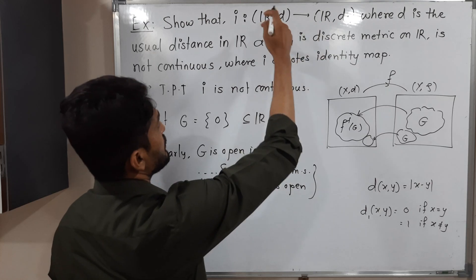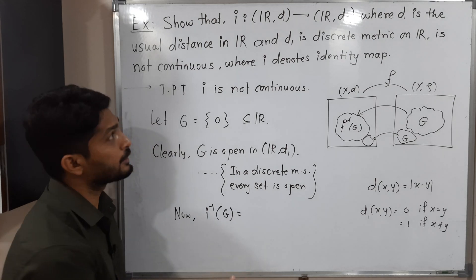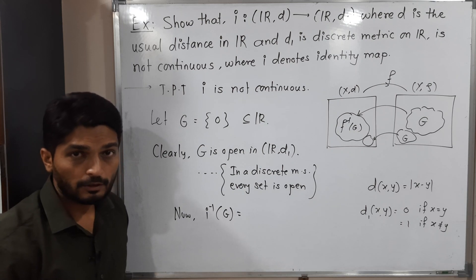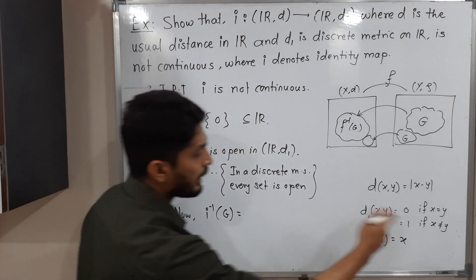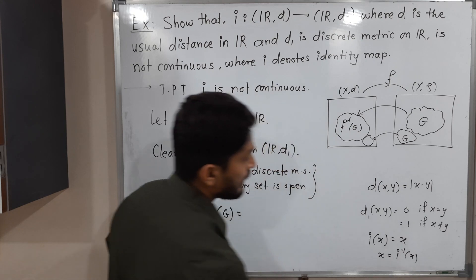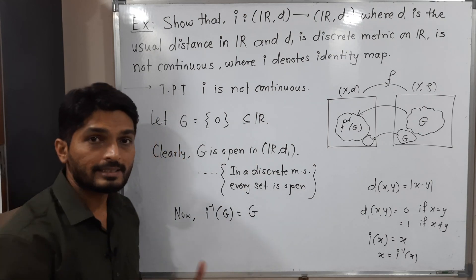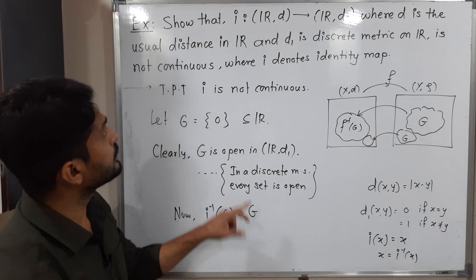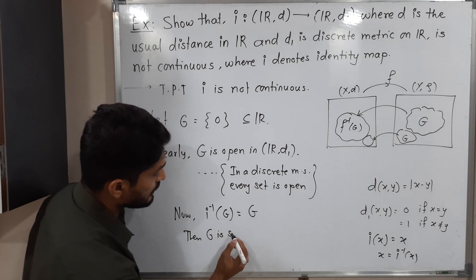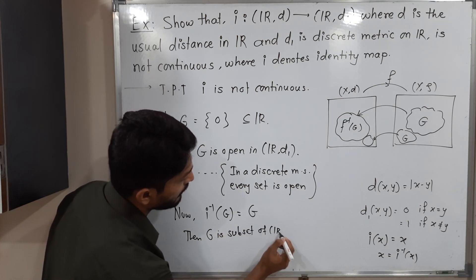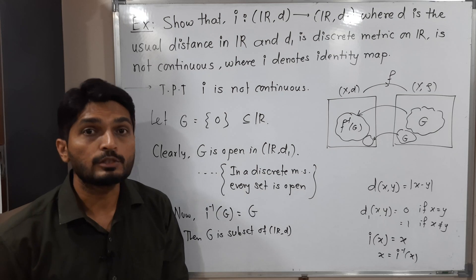Let us find the inverse image of G. Since I is the identity map, I(x) = x, which means I⁻¹(x) = x as well. So I⁻¹(G) is also G — we get the same set. Therefore G = I⁻¹(G) is a subset of Rd with the usual distance. Our target is now to prove that G, the inverse image, is not open in Rd.